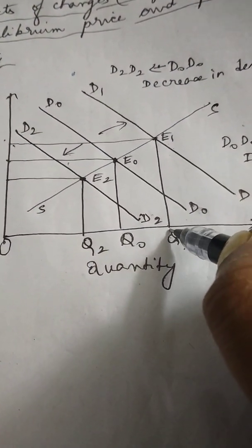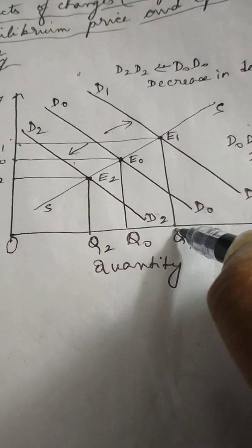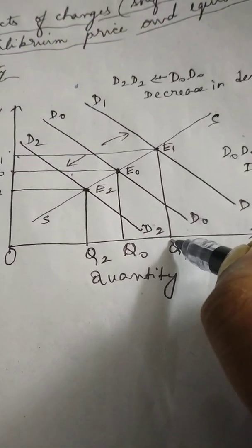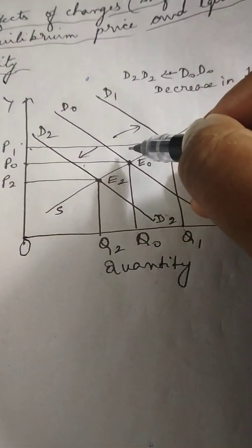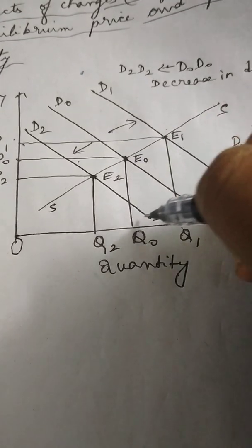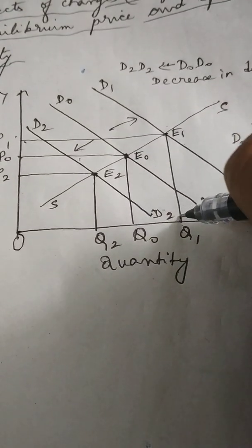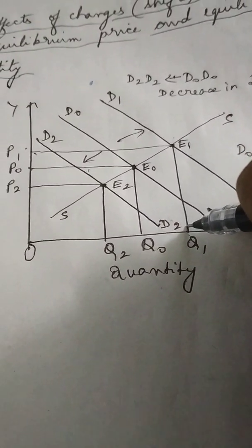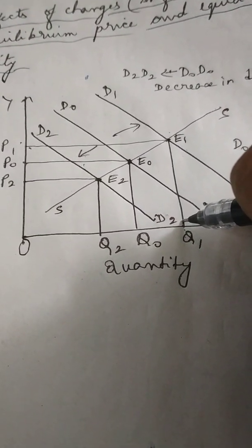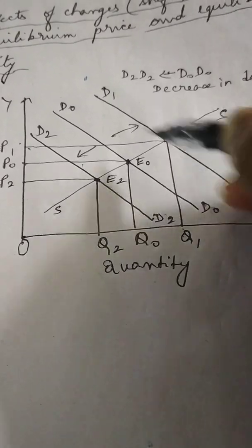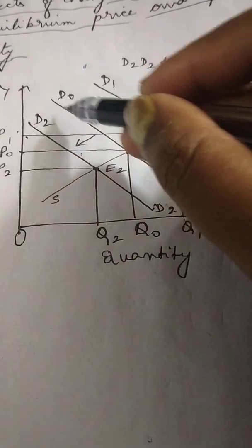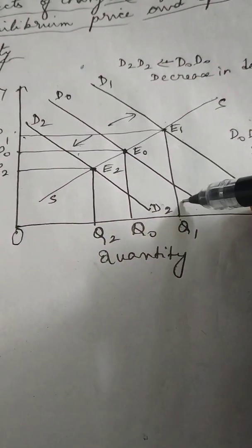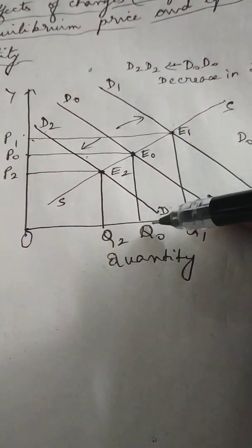Equilibrium price has increased from P0 to P1 and equilibrium quantity has increased from Q0 to Q1. We see that increase in demand increases both equilibrium price and equilibrium quantity. Now suppose demand decreases — this will lead to a leftward shift of the demand curve from D0, D0 to D2, D2.